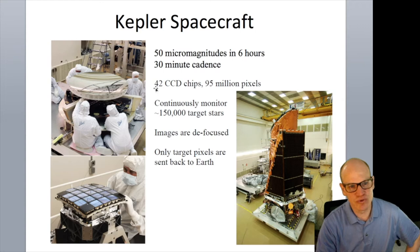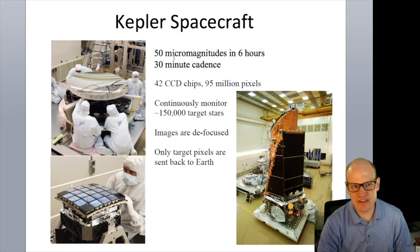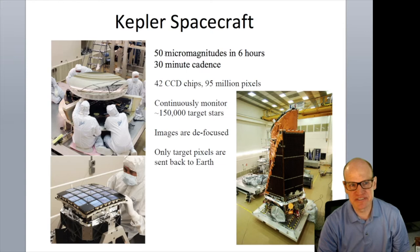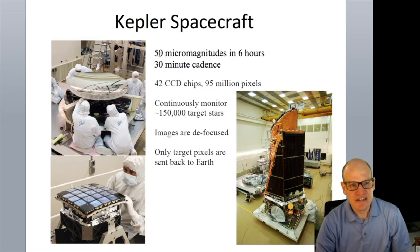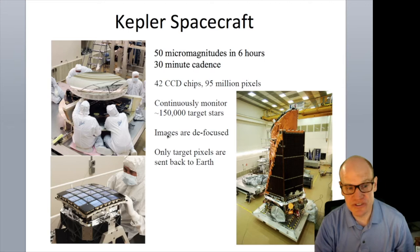Kepler had 42 CCD chips and 95 million pixels — a 95-megapixel camera — but with very large pixels and poor angular resolution by design. The goal was to detect 50 micro-magnitude (roughly 50 parts per million) fluctuations in brightness over a six-hour observation at 30-minute cadence.